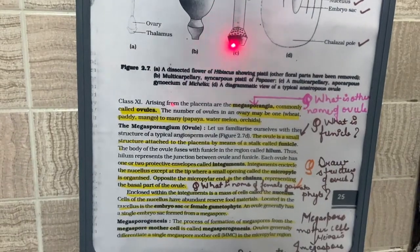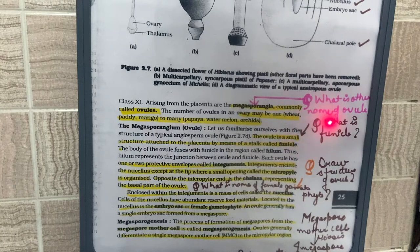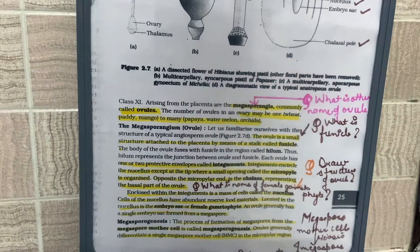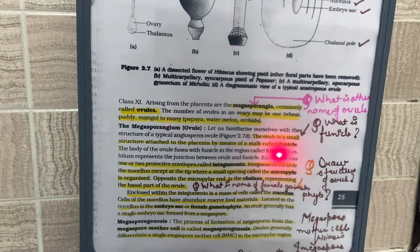An important question from this paragraph: what is the other name of the ovule? The other name is megasporangium. Also, what is the female gametophyte? The embryo sac is the female gametophyte — just as the male gametophyte is the pollen grain, the female gametophyte is the embryo sac.